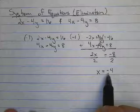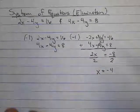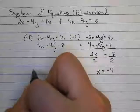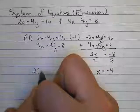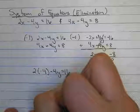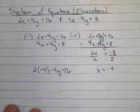So I'm going to go ahead and substitute my x into my first equation. So I have 2 times negative 4 minus 4y equals 16 and we're just going to go through the motions of solving.